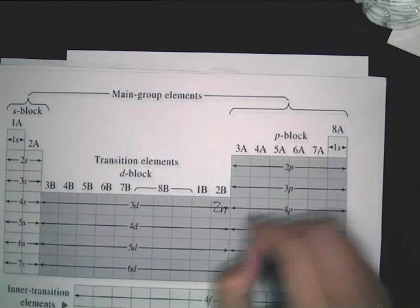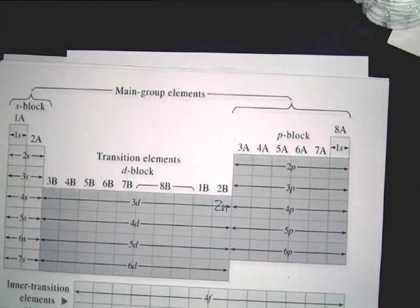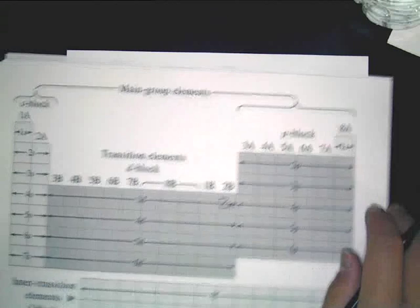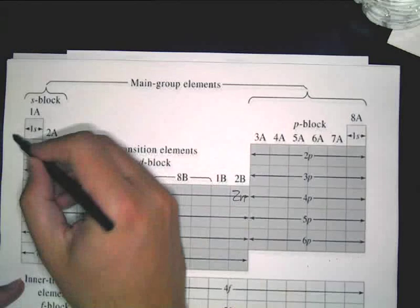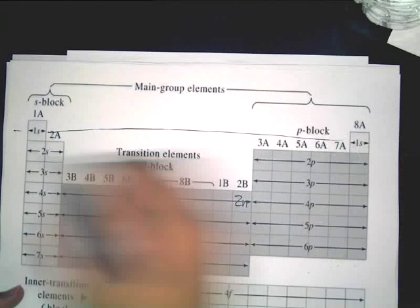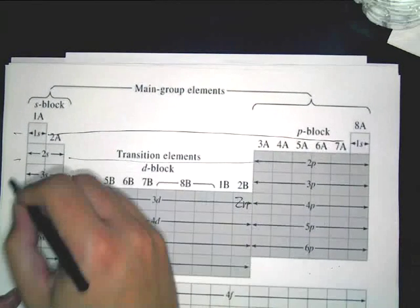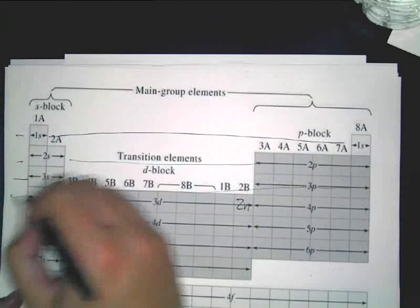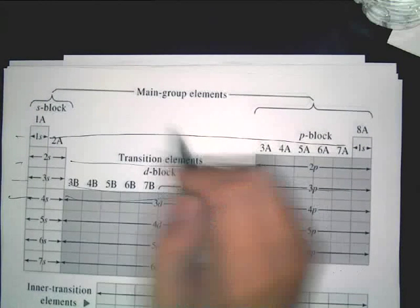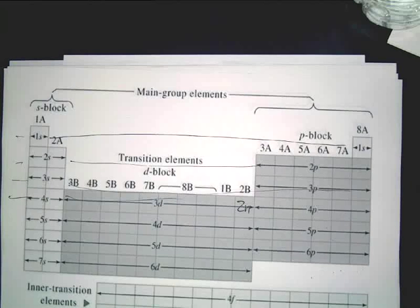Now, to sort of help you there, zinc is located right here. So what that means for you is that you're going to go through and you're going to go 1S, then go back to 2S, 2P, 3S, 3P, 4S, and then it stops in 3D, right? Correct, it does.